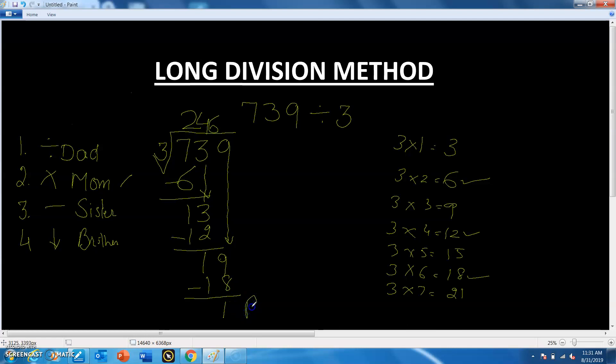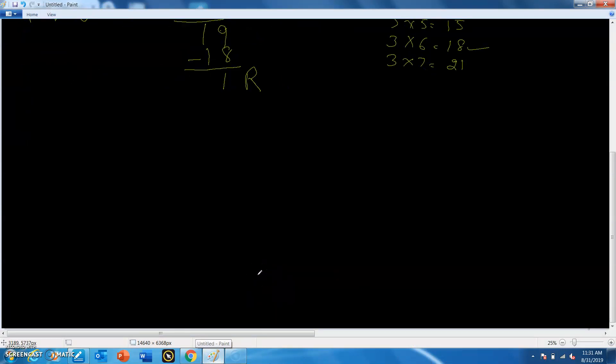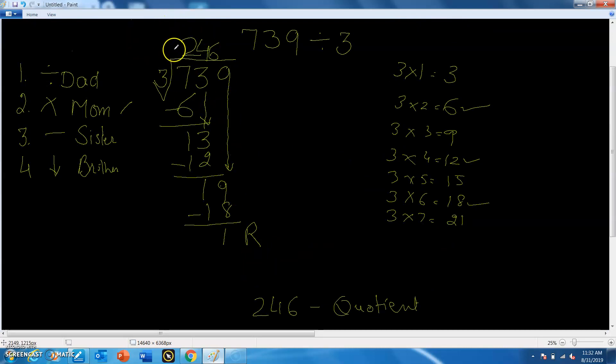Now no more number is here and 1 is less than 3, so this is the remainder. Now we will check whether the question is correct or not. We will see that 246 is the quotient, 3 is the divisor, 1 is the remainder, and 739 is the dividend.